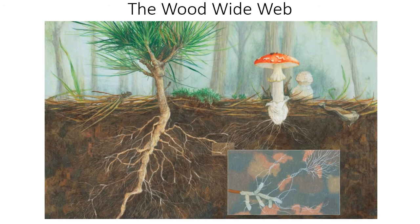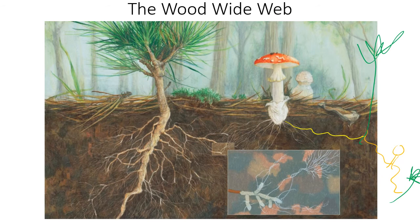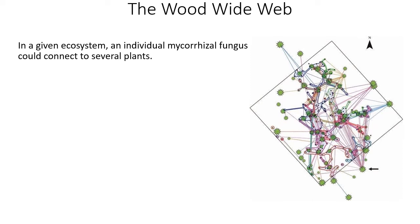So where does the 'web' part come in? One plant connecting to one fungus is just two things communicating, not a network. But that fungus can also be connected to another plant, which connects to another fungus, and so on — creating multiple fungi connected to multiple plants of different species, all physically connected through continuous tunnels. In a given ecosystem an individual mycorrhizal fungus can connect to several plants. This stem map from a study by Suzanne Simard shows trees as green clusters, with lines representing mycorrhizal connections between different trees.